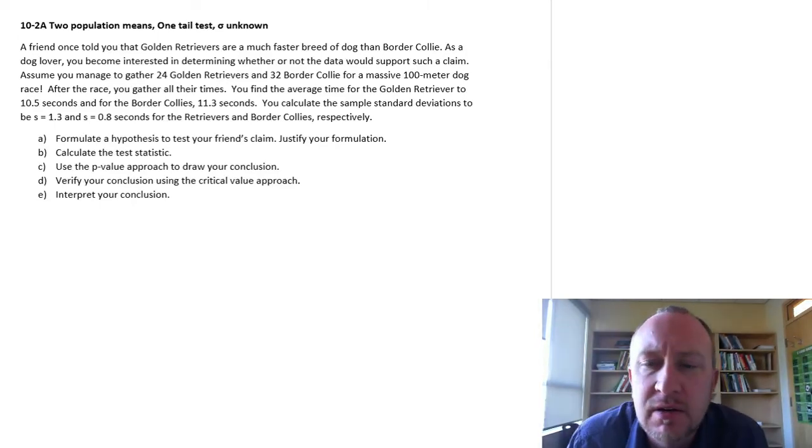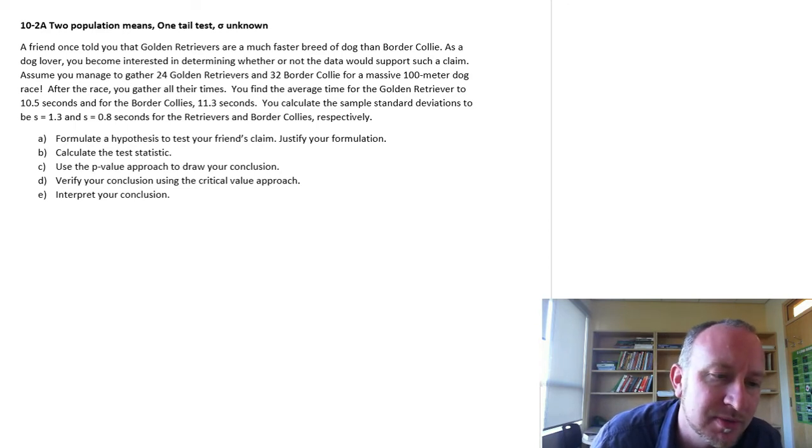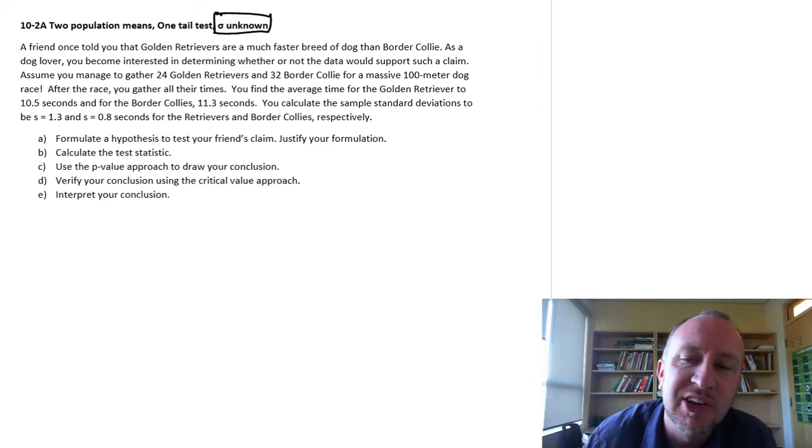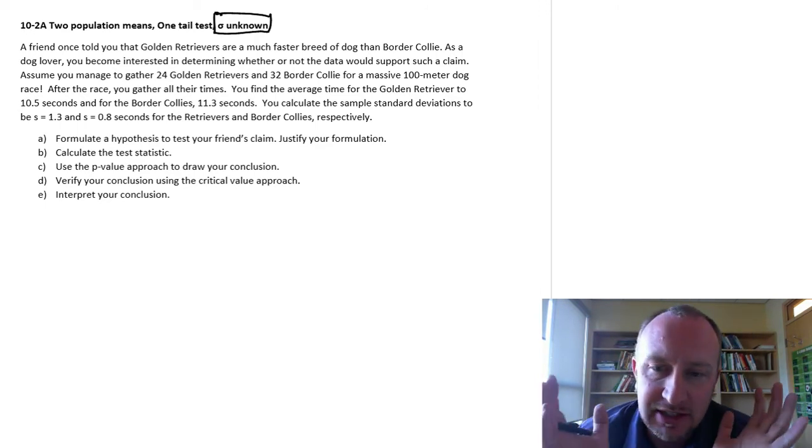Hello and thank you for watching this next exercise looking at another hypothesis test on a true population mean. This time we are not going to assume that we know the population standard deviation. Sigma is unknown and so as you might guess this means we are using the t-distribution.